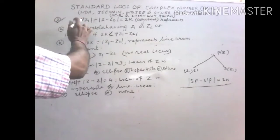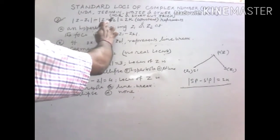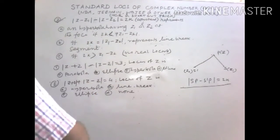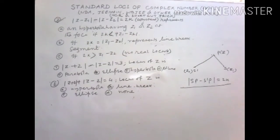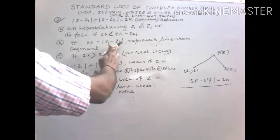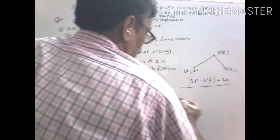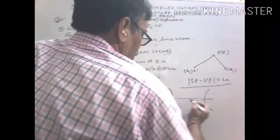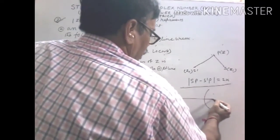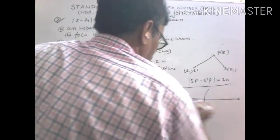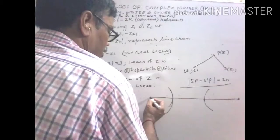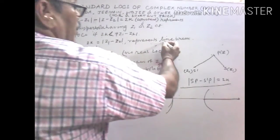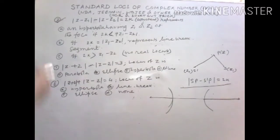So |Z - Z1| - |Z - Z2| = 2k: if 2k < |Z1 - Z2|, it represents a hyperbola; if 2k equals |Z1 - Z2|, it represents a line breadth — that is, a straight line between and beyond the two parts of the hyperbola, which gives two ray segments.